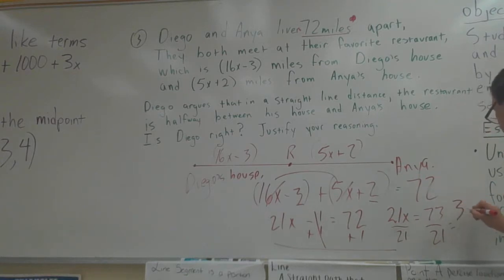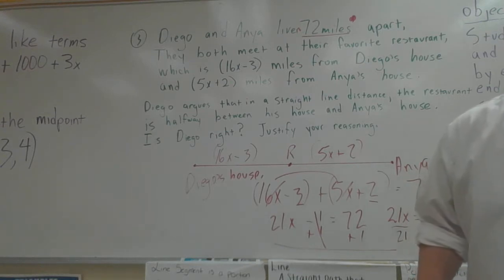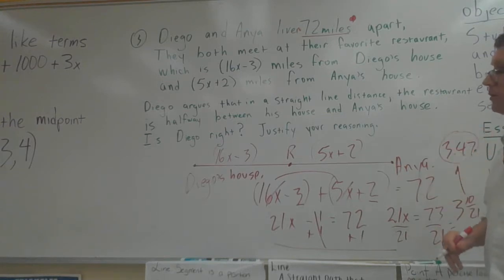Let's see if we got that on there, the camera. 3 and 10/21, which is 3.47. So x equals 3.47. We plug it in here.